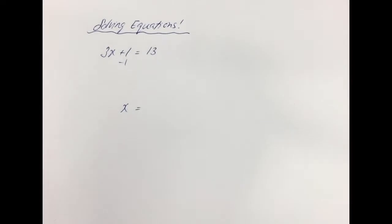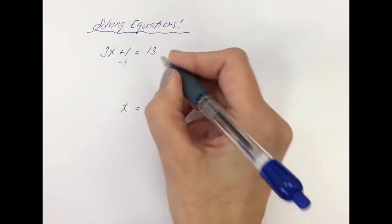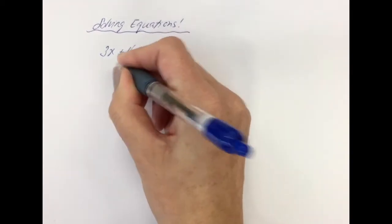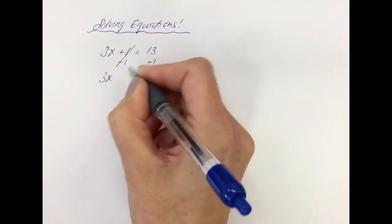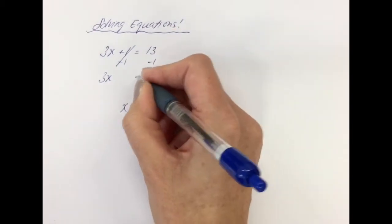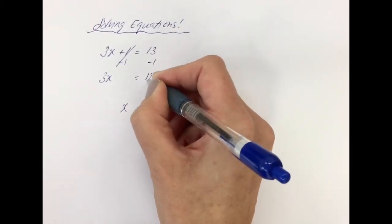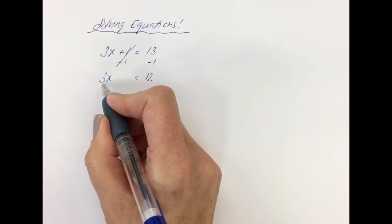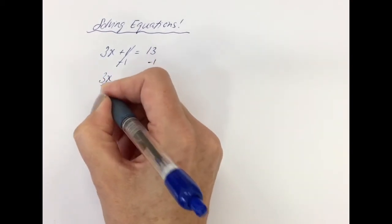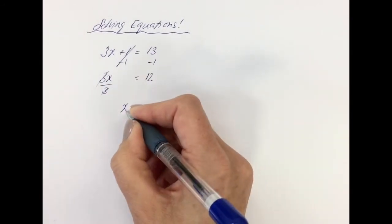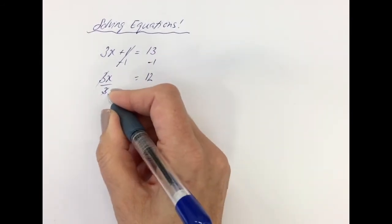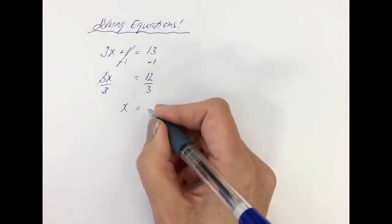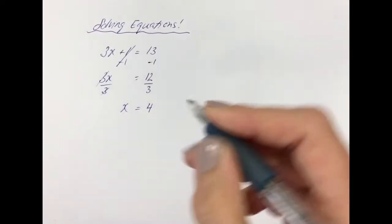To get rid of the 1, we need to take it away. If I take it away on the left-hand side, I need to take it away on the right-hand side. That leaves me with 3x — 1 take away 1 is nothing — equals 13 take away 1 is 12. Then to get rid of the times by 3, do the opposite: divide by 3. 3 divided by 3 is 1x. But if you divide by 3 on the left-hand side, you must divide by 3 on the right. So 12 divided by 3 is 4.